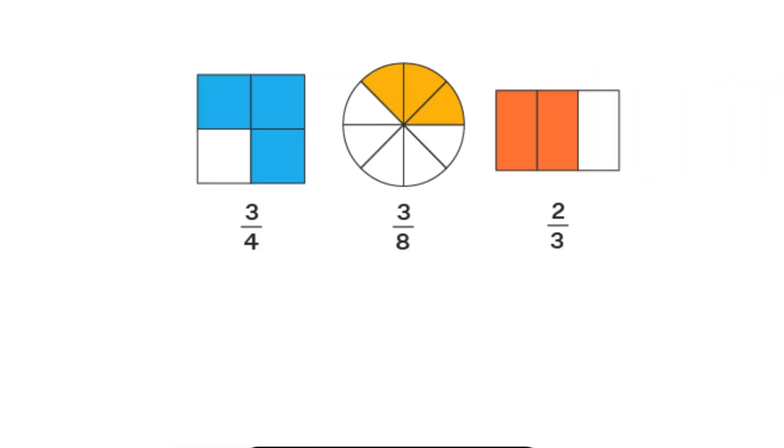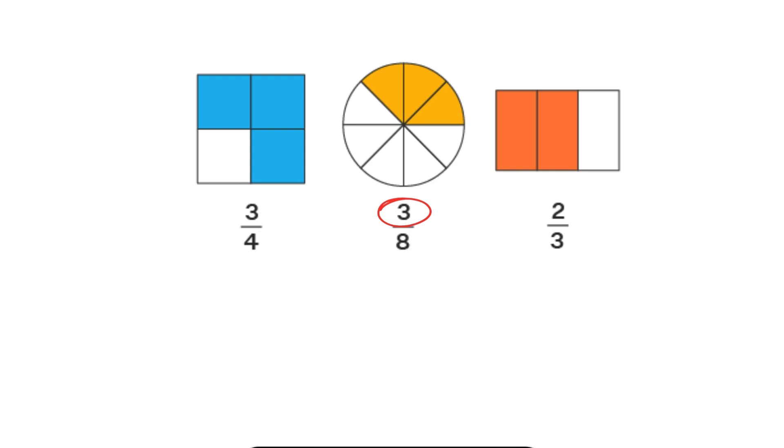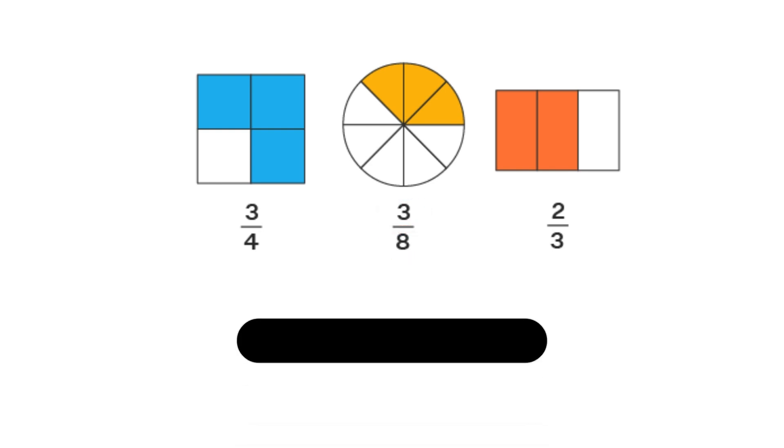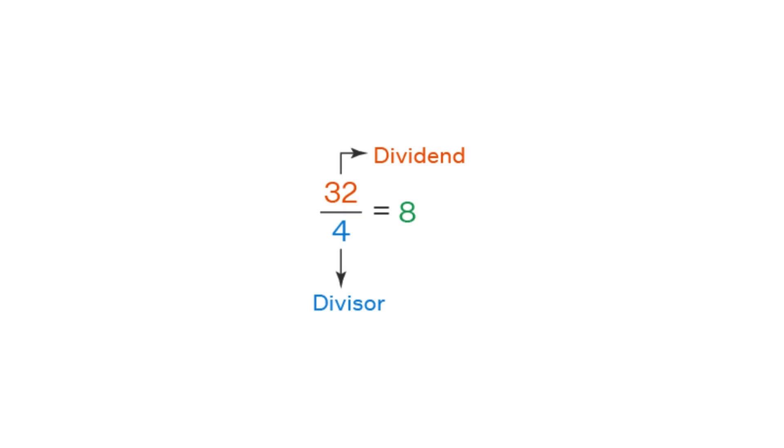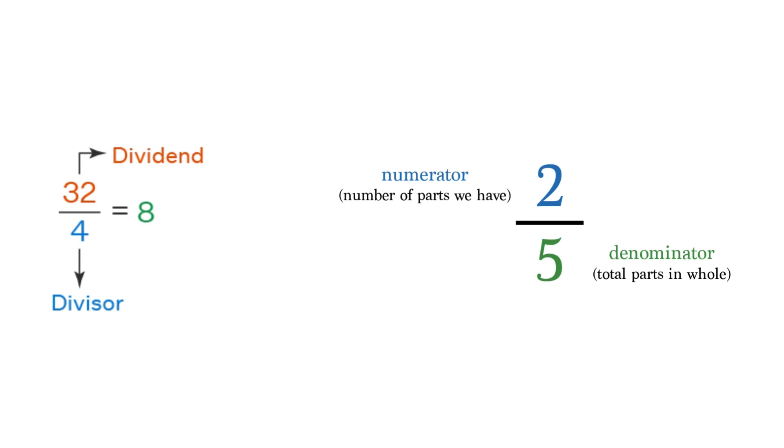Fractions. A fraction is a way to express the division of one number by another. It uses a symbol called a fraction bar, where the dividend is placed on top, and the divisor is placed on the bottom. The top number is called the numerator, and the bottom number is called the denominator.